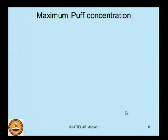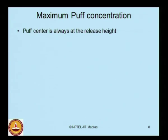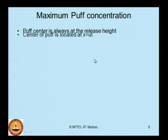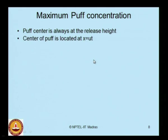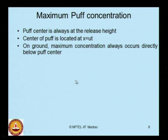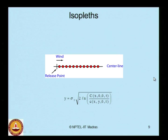For the maximum puff concentration: the puff center is always at the release height, wherever the release source may be. The center of the puff is located at x equal to u*t. On the ground, the maximum concentration always occurs directly below the puff center, which is the projection of the puff center.